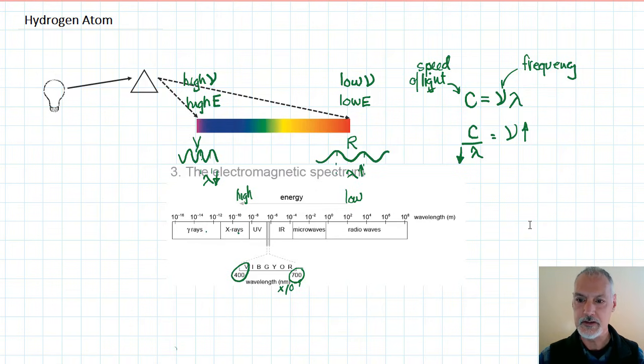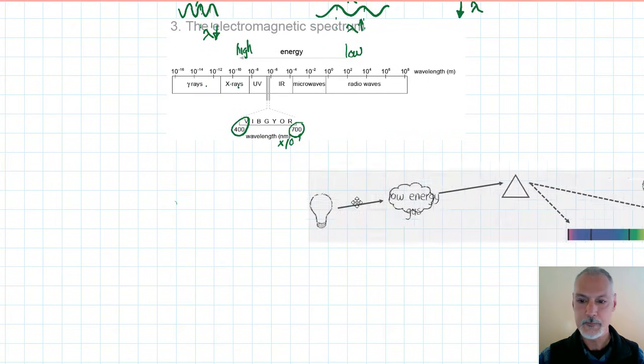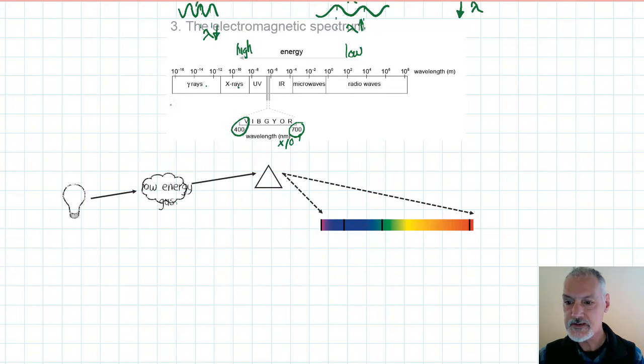Let's look at some other spectra that can be generated. In this situation I introduce a gas in between our white light and our prism. So our white light travels through this low energy gas and what we see is a spectrum with bands of colors removed from it, specific bands of colors. This is called an absorption spectrum because we've essentially absorbed some of the colors of light.